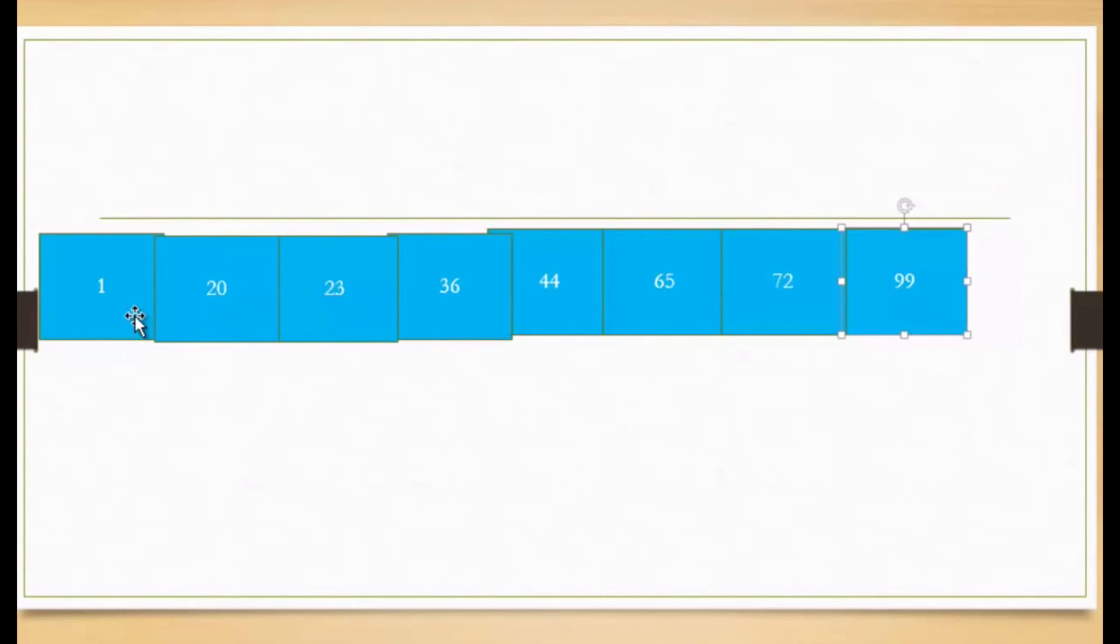So as you can see, the algorithm picks a pivot point, sorts the elements only relative to that pivot point. So it doesn't sort it in an exact order, but it makes sure everything is greater than is on one side and less than is on the other side. And then continues to sort it.